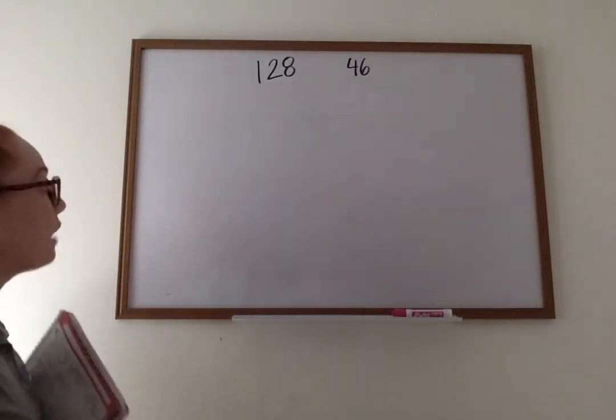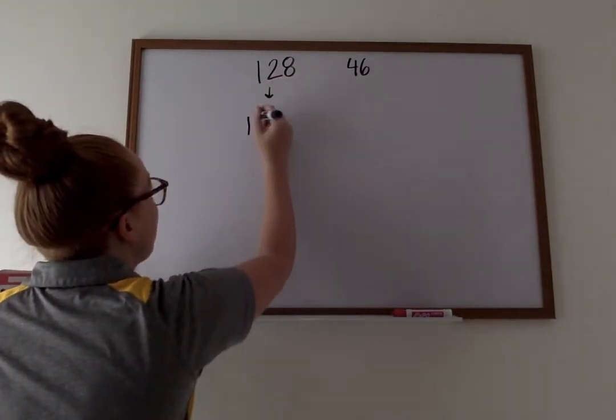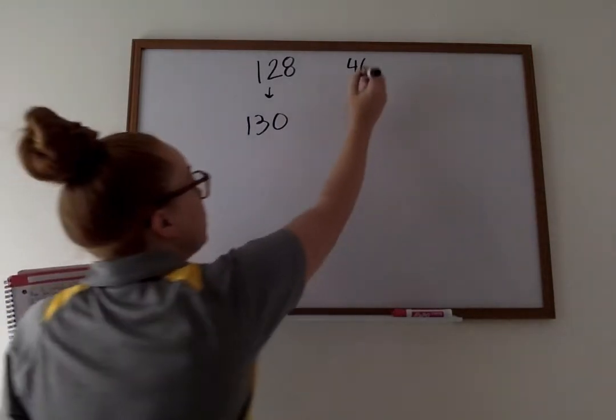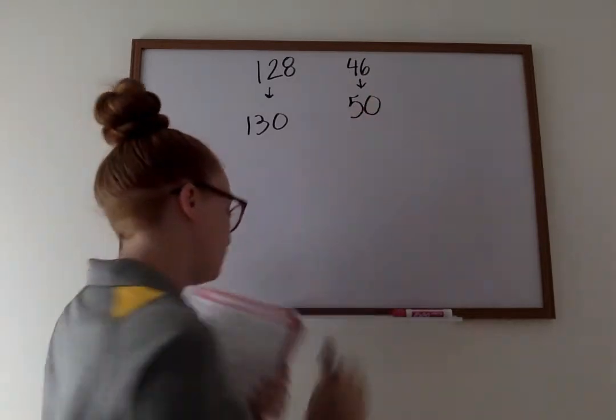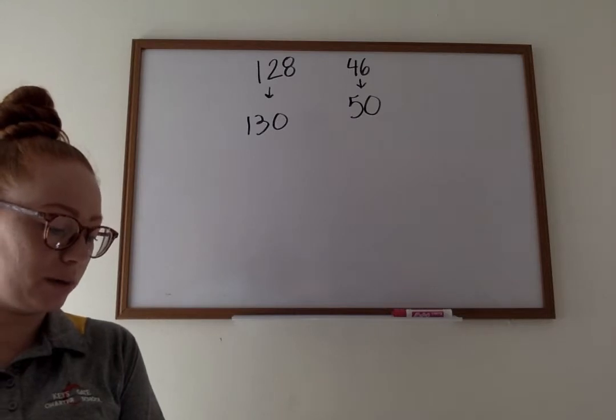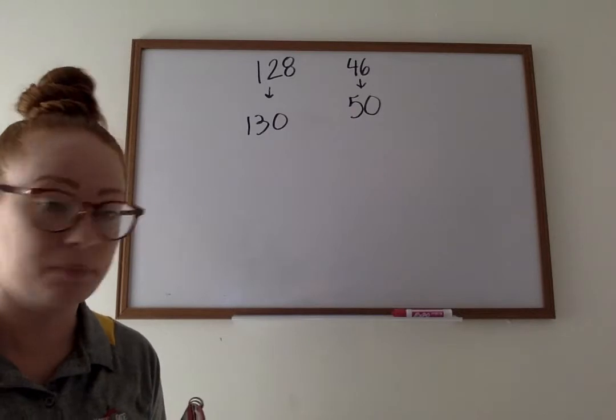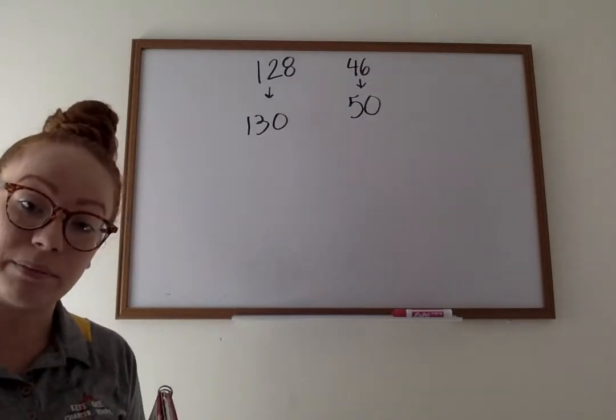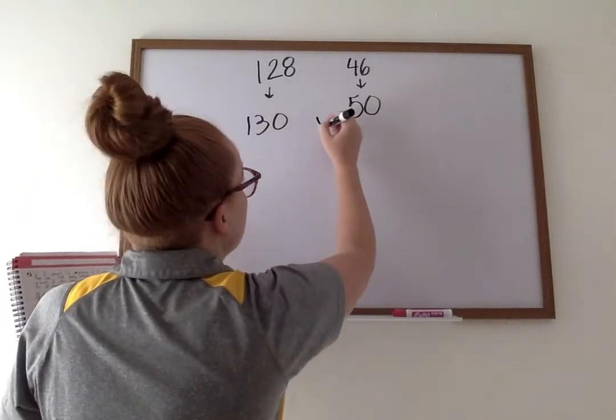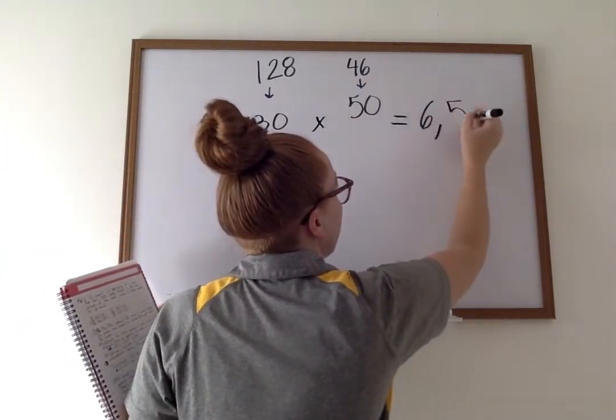First, if we have 128, that number would estimate into 130. 46 would estimate into 50. But the question is asking, they want to know what the total number of math books would be in the very end. The total number, all these math books, how many math books there are going to be. To do this, we're going to multiply these two numbers to figure out how many are in all. So we're going to take our 130 times our 50. And then that is going to give us our answer, which is 6,500.